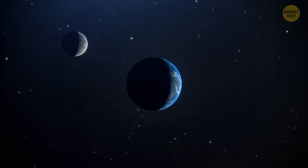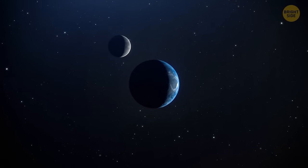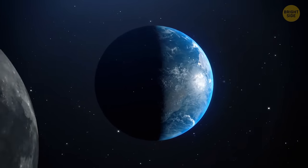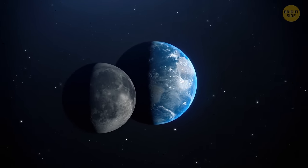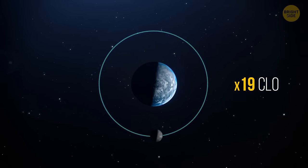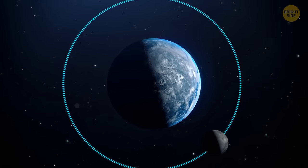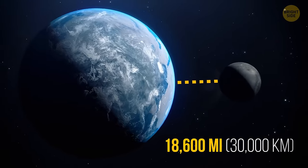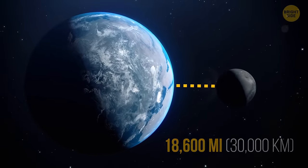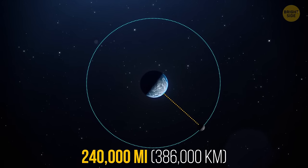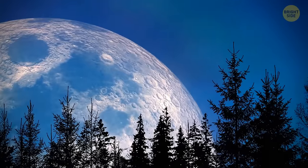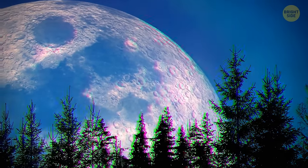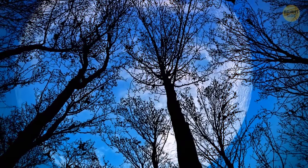The coolest thing? When the moon did have an atmosphere, the satellite was 3 to 10 times closer to our planet. One computer simulation even suggests the moon was probably up to 19 times closer than it is now. The distance between it and our planet could be 18,600 miles, while these days our satellite is around 240,000 miles away. That's why the moon looked much, much bigger in the sky. Unfortunately, at that time, not even dinosaurs were around to admire the view.